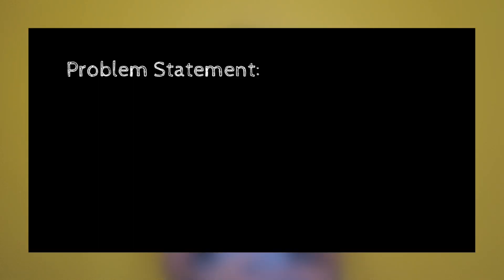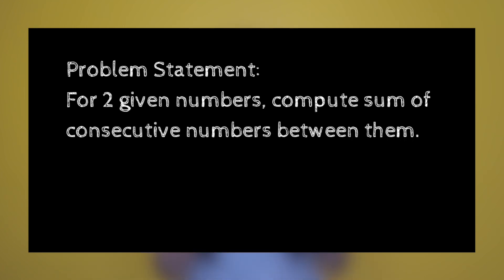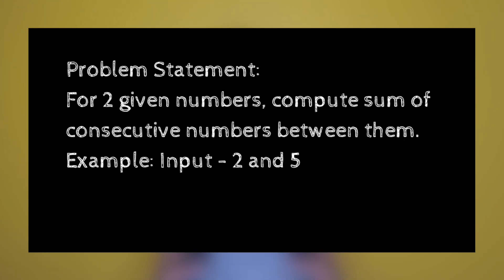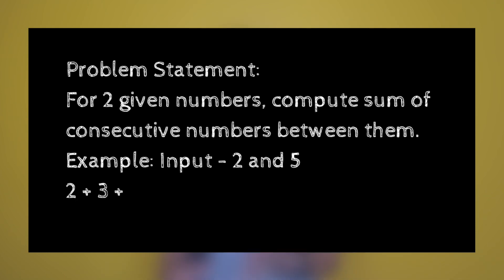Let's take a simple example. The problem is that you're given two numbers and you have to find the sum of consecutive numbers between those two numbers. For example, given 2 and 5, you have to find the sum of 2 plus 3 plus 4 plus 5, which is 14. The combination of 2 and 5 is your first test case.